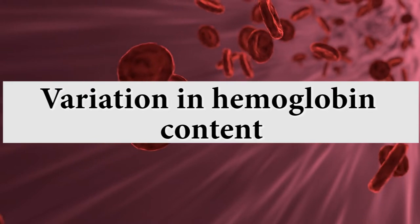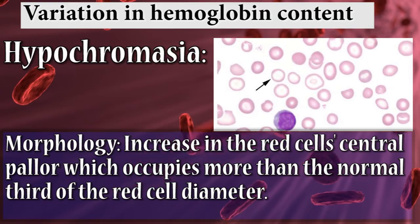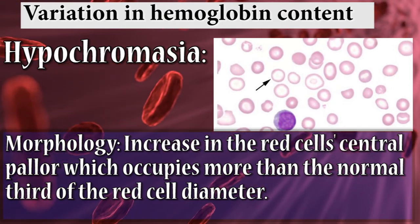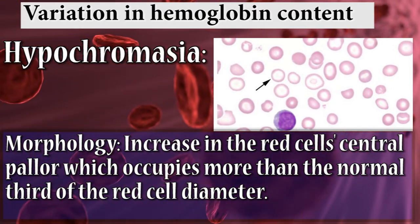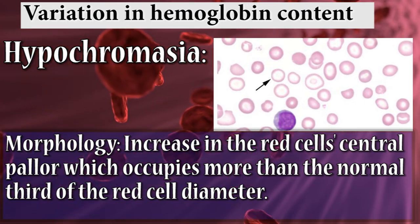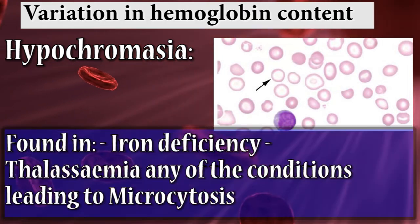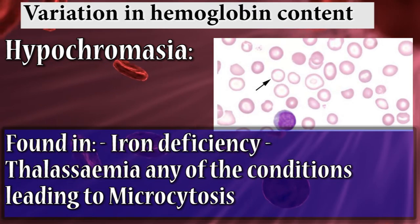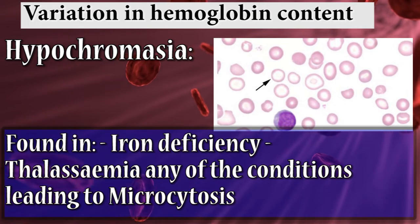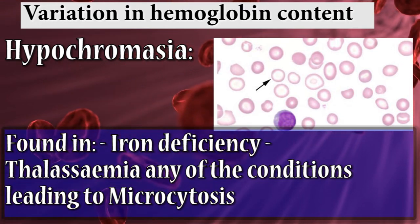When we talk about variation in hemoglobin content, the first term is hypochromia. The morphology shows increased central pallor which occupies more than the normal one-third of the red cell diameter. Found in iron deficiency, thalassemia, and any of the conditions leading to microcytosis.